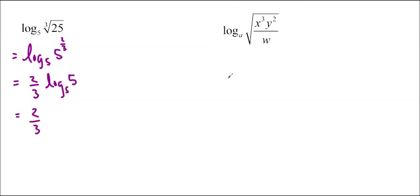And the last one, we want to simplify it so that it doesn't have any radicals, and we have all separate logs. So that's what it means by simplify. So basically, log base A of x cubed y squared over w to the half. That's what that radical means. You can see, again, I put it inside of the argument.